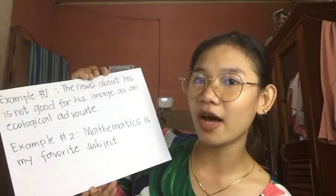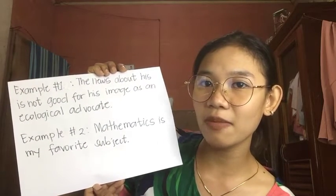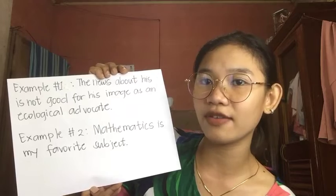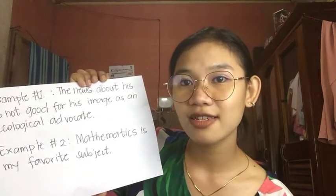Rule number eighteen: nouns that are plural in form but singular in meaning, such as mathematics, economics, news, politics, etc., require a singular verb. For example, 'The news about him is not good for his image as an ecological advocate.' Second: 'Mathematics is my favorite subject.'